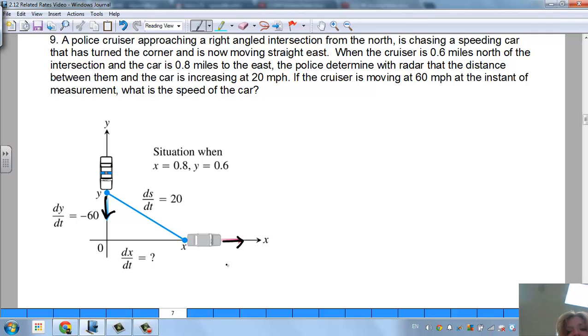So the police cruiser is approaching a right-angled intersection from the north, so it's coming in this direction right here. And it's chasing a speeding car that has turned the corner, is now moving east. When the cruiser is 0.6 miles away, so this is x right here, excuse me, that's the cruiser. The cruiser is 0.6 miles away, so this is going to be our y value. North of the intersection, and the car is 0.8 miles away to the east. The police determines with radar that the distance between the car is increasing at 20 miles per hour. Now, when they're talking about that, they're talking about this distance, s, here, because that's really what's increasing as he's chasing that car.